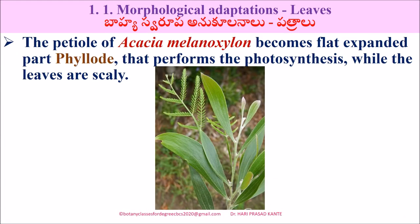Next, a very important one. The petiole of Acacia melanoxylon becomes a flat, expanded, leaf-like structure called a phyllode, which performs photosynthesis while the actual leaves are reduced to scales. This phyllode modification in Acacia melanoxylon is very important.